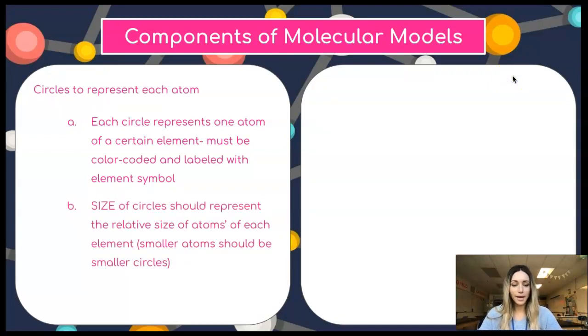Secondly, we should make sure that the size of our circles align accurately with what we know about the mass or the radius of each element. For example, if I am drawing oxygen and hydrogen, I should make sure that my hydrogen atoms are represented with smaller circles to indicate that hydrogen is a smaller atom than the oxygen.